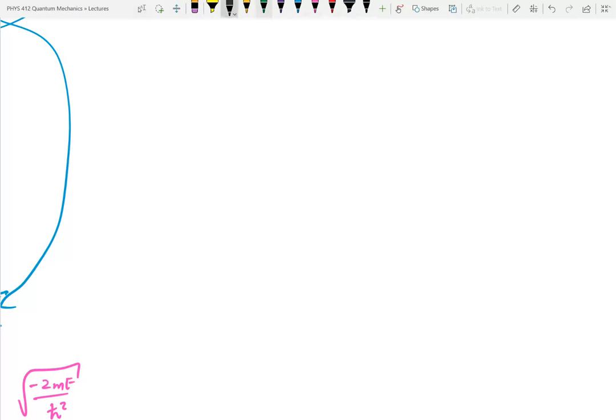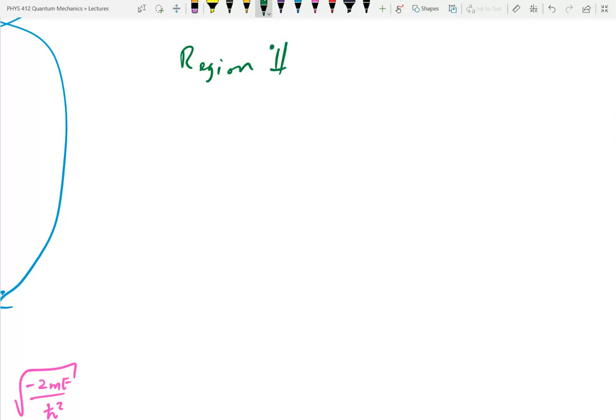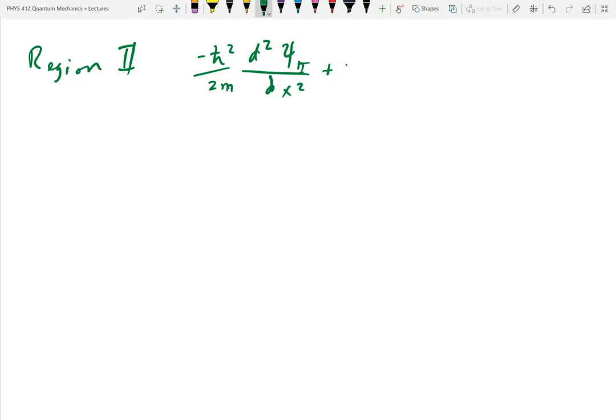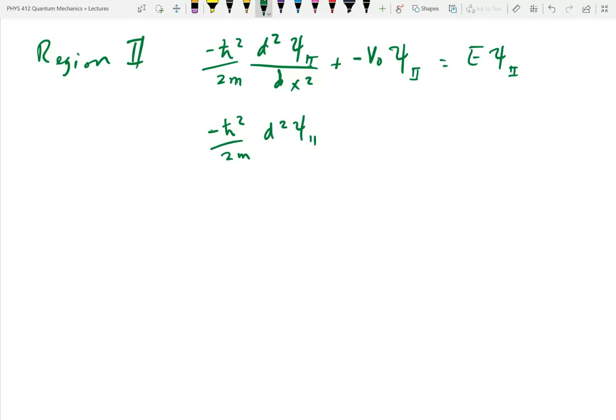So in the middle region, I start with my Schrödinger equation. I'm going to have minus h-bar squared over 2m d second psi 2 dx squared. Plus my potential here is going to be minus V0 in that region. So there I've written out my full Schrödinger equation.